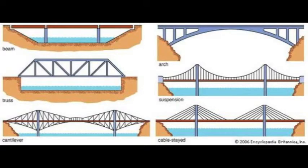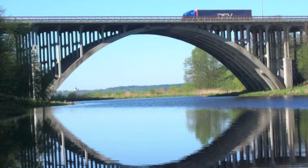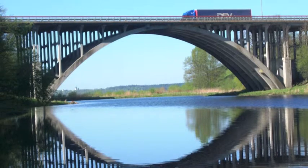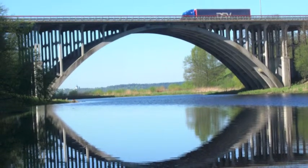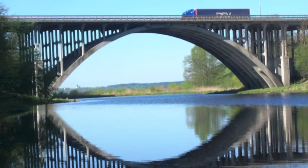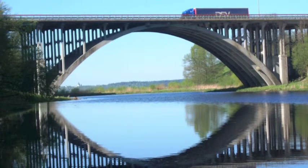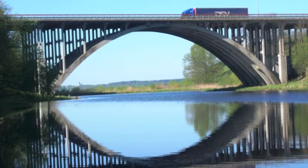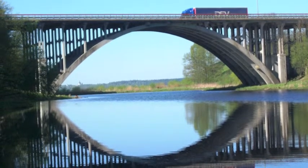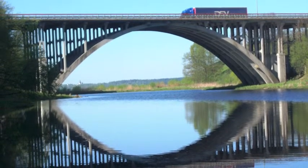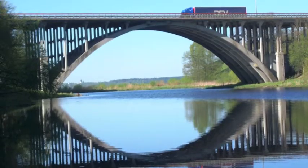The five types of bridges are known as arch, suspension, cantilever, beam, and truss. Arch bridges are one of the oldest types of bridges. Instead of pushing straight down, the weight on an arch bridge is carried outward along the curve to support each end. The natural curve of the arc reduces tension throughout the bridge.